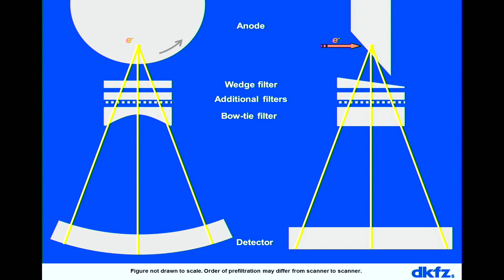Typically today we do spiral CT scans — not just a circle, but the patient is transported through the CT system continuously, called a spiral CT trajectory. Since we also talk about dose, I need to go into the internal design of CT systems. We have a rotating anode; the electrons that hit the anode generate X-rays. The X-rays then run through a series of filters whose most important aim is to remove low-energy photons before they reach the patient, reducing dose.